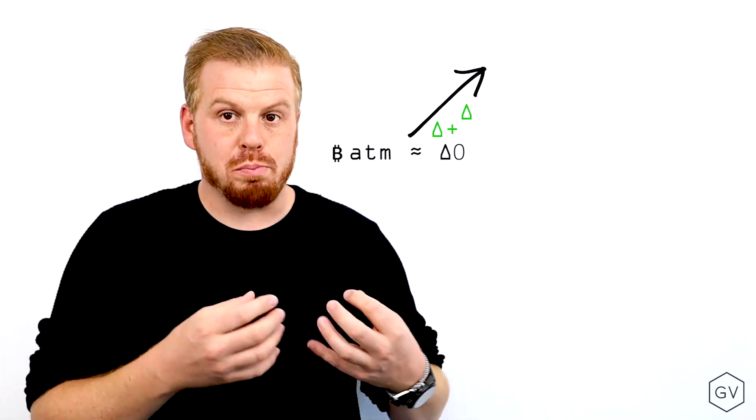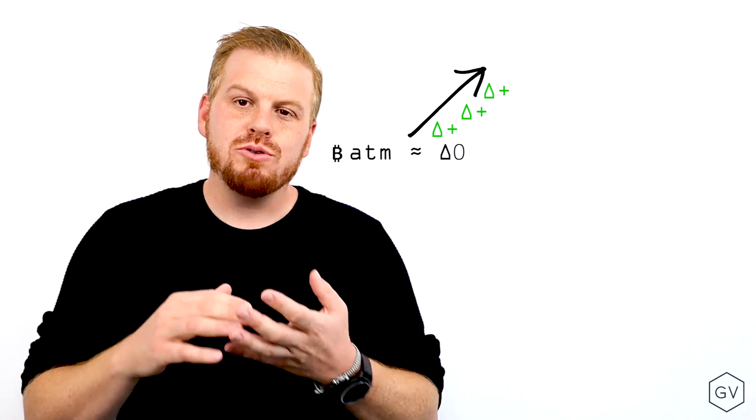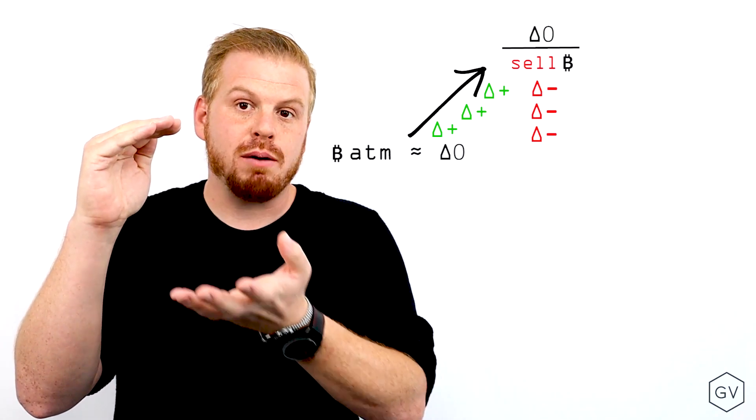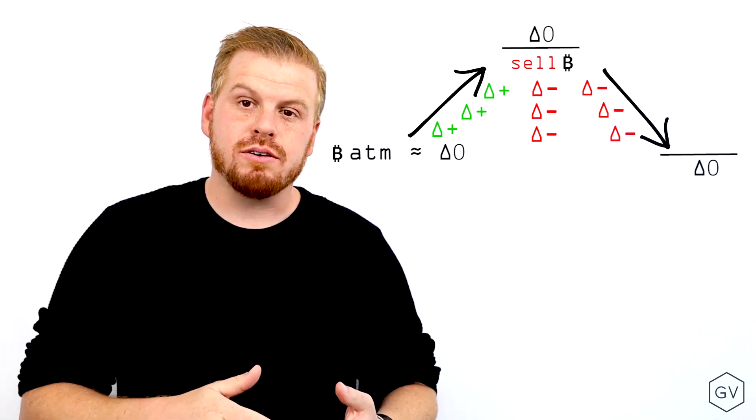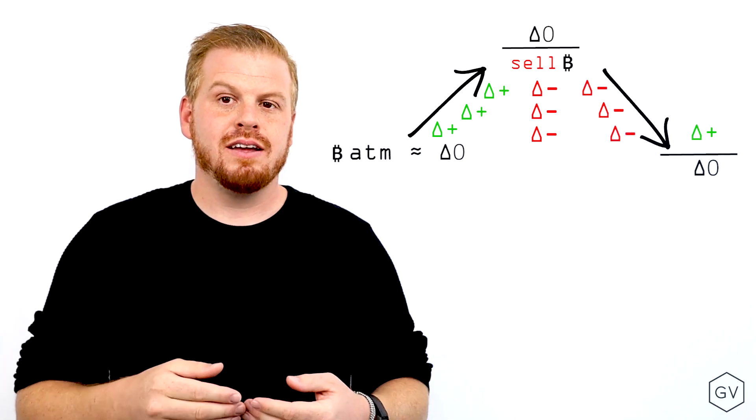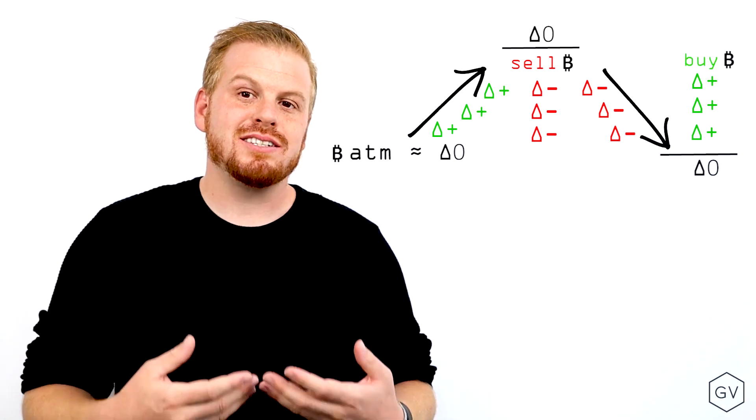As the underlying rallies, you'll pick up deltas along the way. And in order to flatten those out, you need to sell the underlying as the spot price rallies. As the spot price then goes back down, you'll need to buy back those shorts that you just sold in order to rebalance your deltas again.